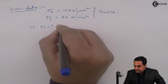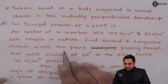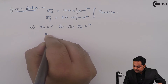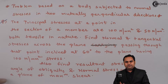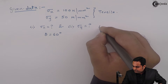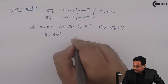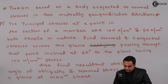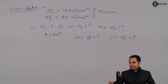Next, find the normal and tangential stresses — that is Sigma N and Sigma T — across the plane passing through that point inclined at 60 degrees (theta = 60°) to the plane having 100 N/mm² stress. Also find the resultant stress, the angle of obliquity denoted by phi, and the normal stress on the plane of maximum shear.